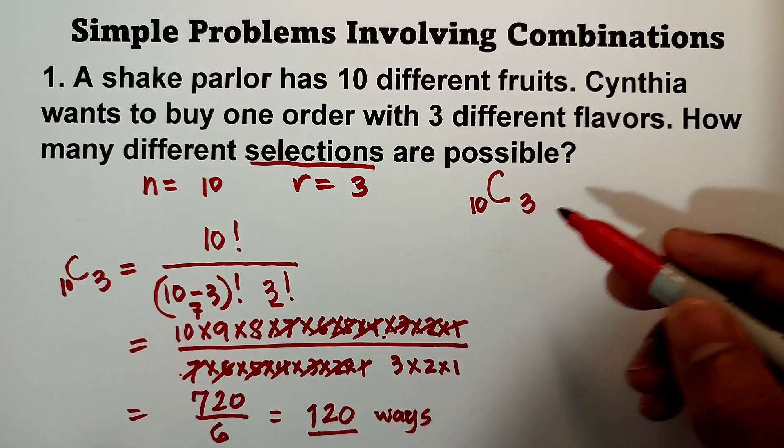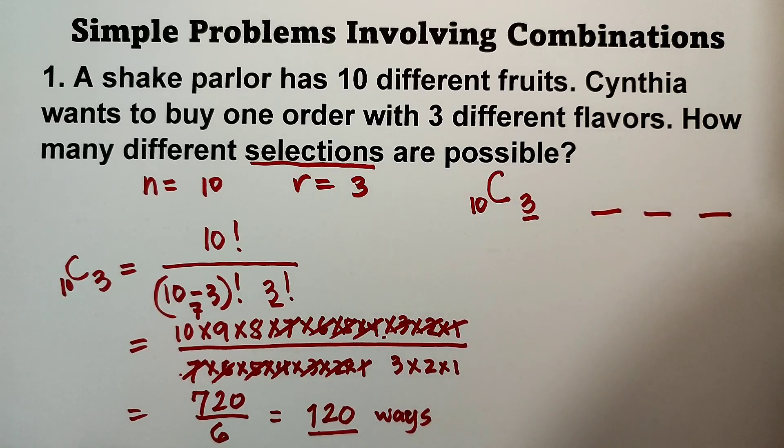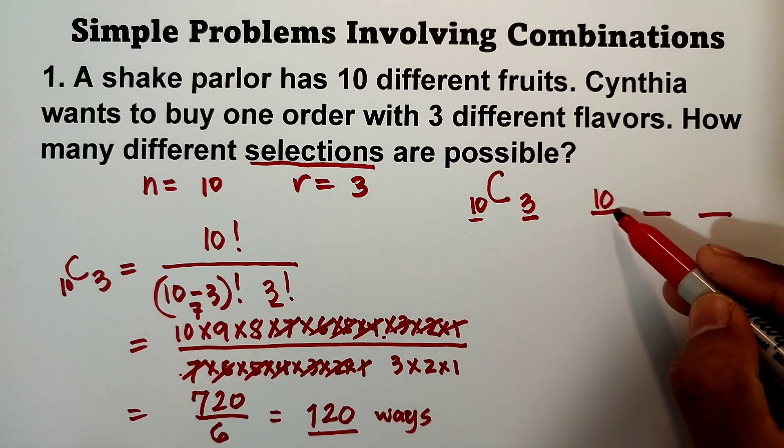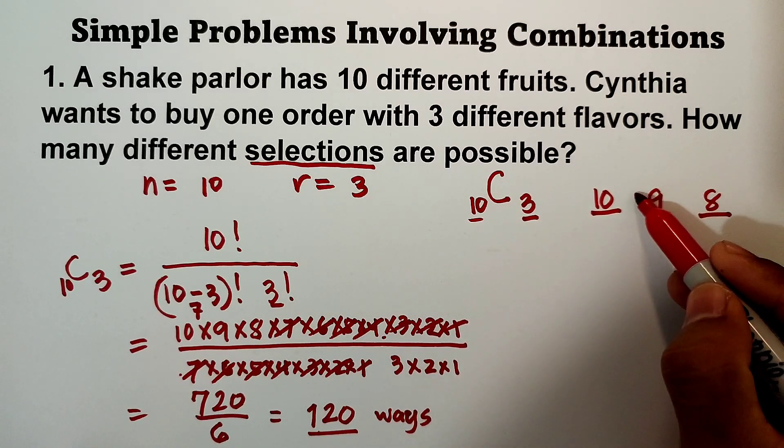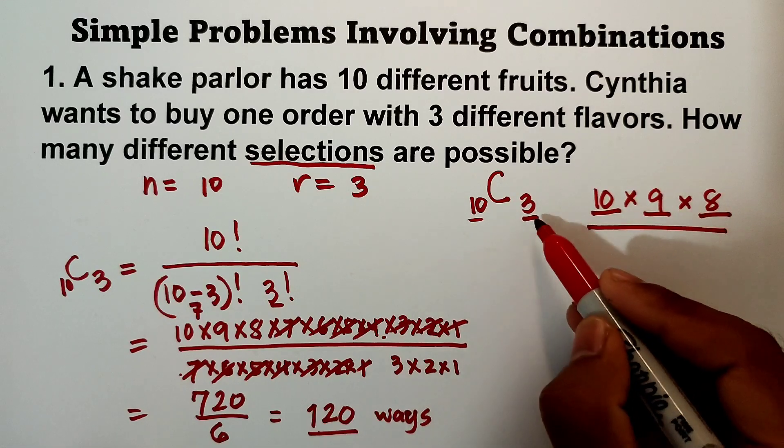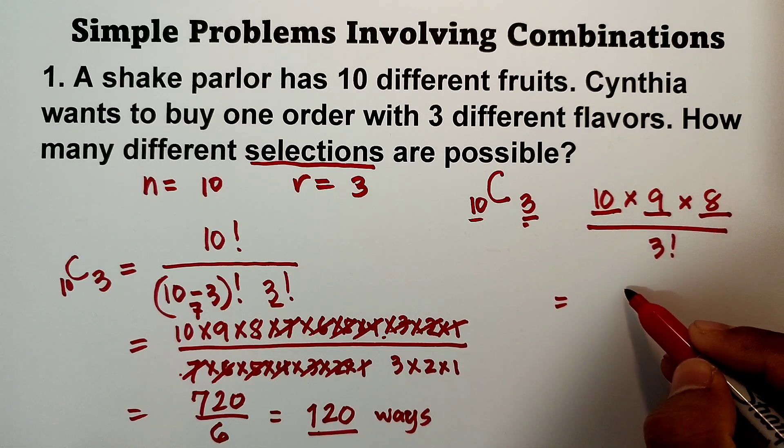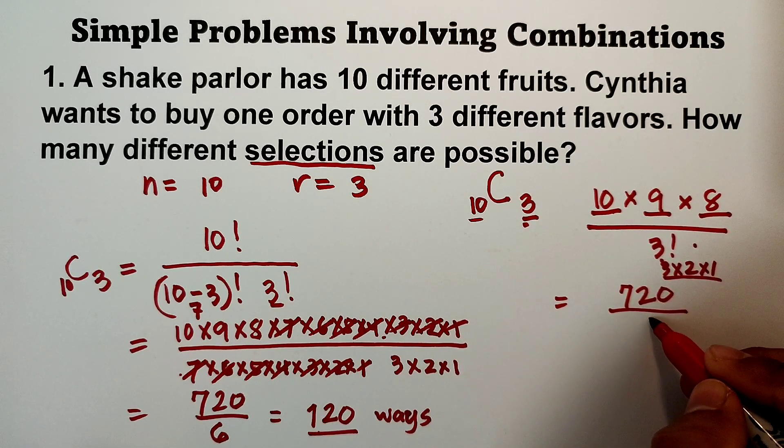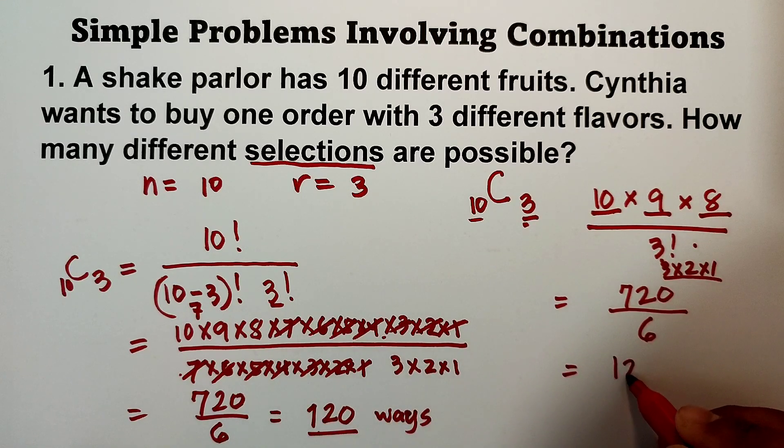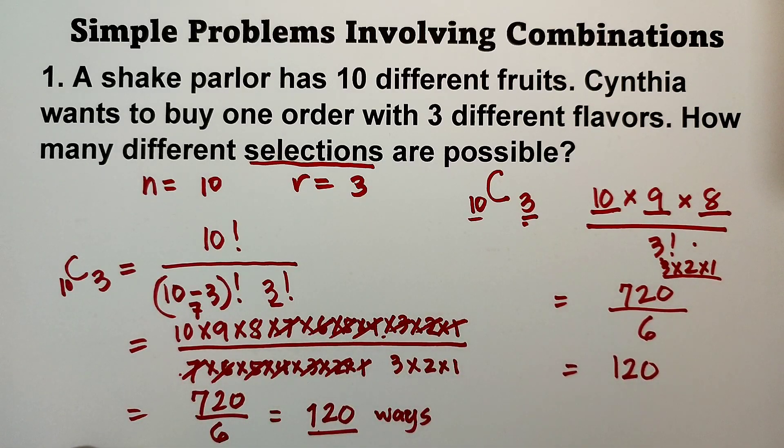Okay, so now the shortcut. It's quick, right? Our r is 3, so put 3 lines. Then start with 10, then subtract 1 from 10, so it becomes 9, 9 minus 1 is 8. Okay, and then multiply that in the numerator and divide by r, which is 3 factorial. So we know 10 times 9 is 90, times 8 is 720. Divide by 3 factorial, that is 3 times 2 times 1, which is 6. 720 divided by 6 is 120. Same answer, so you don't need to expand the given - you can do it quickly like this with the shortcut.